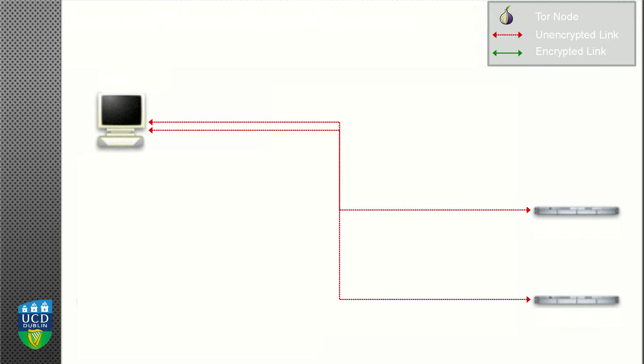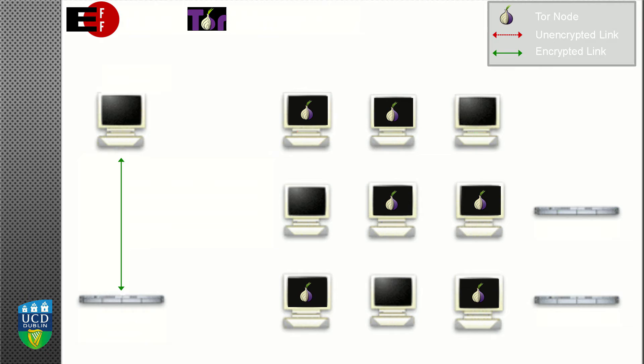I'm going to explain how it works very briefly. This is how the regular web works: you're Alice on the left-hand side, you open your laptop, you access a particular website, you type in ucd.ie, some stuff happens where you figure out where ucd.ie is, and you talk to a server which gives you the website. When you look for google.ie, you talk to a different server and they give you back the website. As a forensic scientist, to figure out what websites you're accessing, I can just investigate the network communication and see who's accessing that site. Here is a diagram for how TOR works.